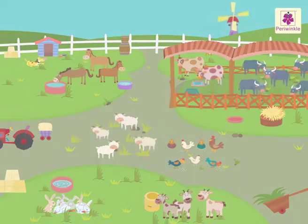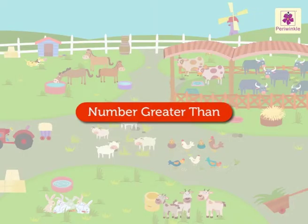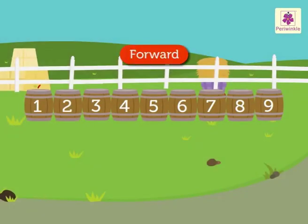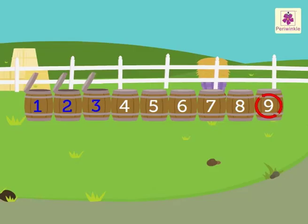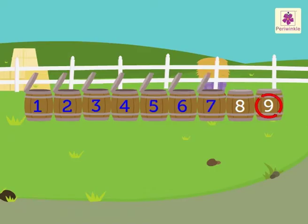What do you mean by a number greater than? As we count forward, the number value increases. 9 is greater than 1, 2, 3, 4, 5, 6, 7, and 8.